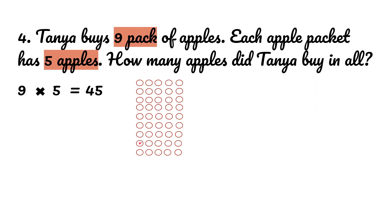Here we have nine packets of apples and five apples in each row. So we do nine times five which is 45. So 45 is the amount of apples that Tania bought in all.